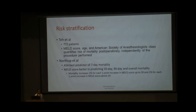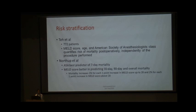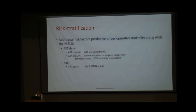Teh et al. proposed the Mayo Risk Score from 772 patients, finding that age and ASA status also independently added to mortality risk regardless of procedure. This score has the best 30- and 90-day predictive value for mortality. Northup et al. found that ASA status was a better predictor of immediate perioperative 7-day mortality, while MELD was better for 30- and 90-day mortality. They found that for every 1-point increase in MELD, mortality rose by 1% up to MELD 20, beyond which it increased by 2% per point.